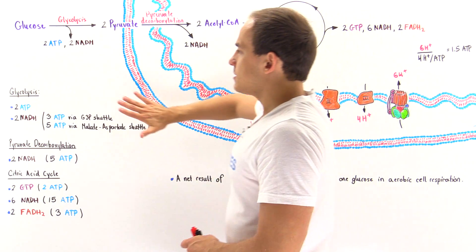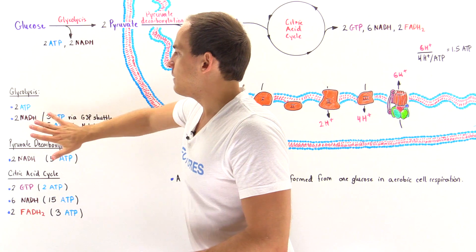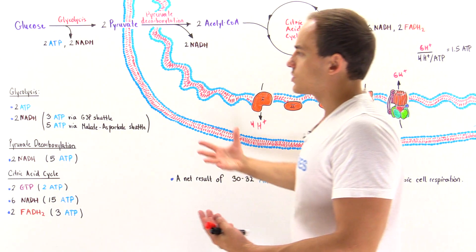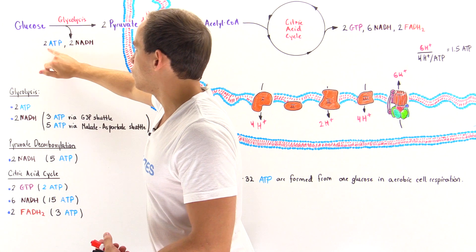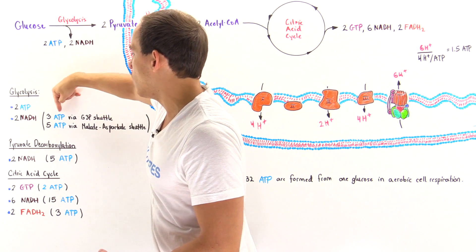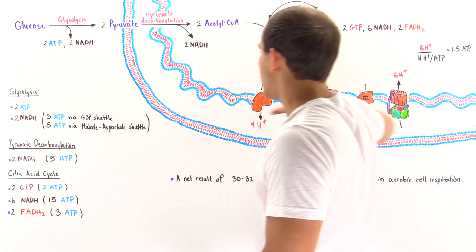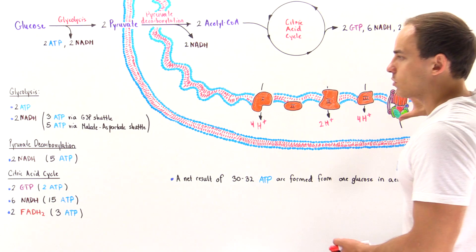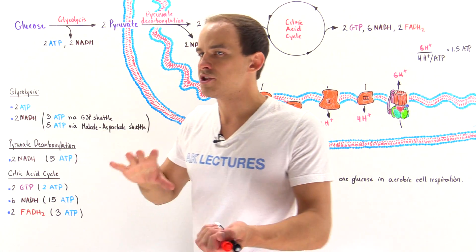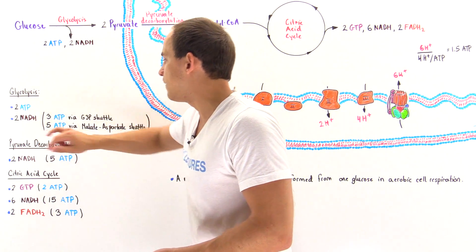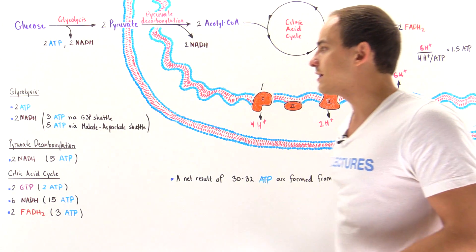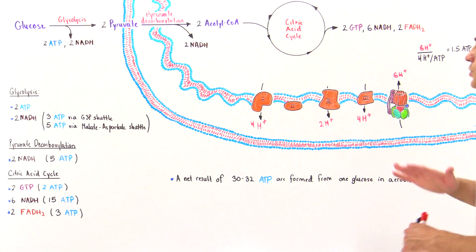So in glycolysis, 2 ATP molecules are produced directly, plus additional ATP via oxidative phosphorylation from the NADH on the electron transport chain. This ranges from 3 to 5 ATP depending on the type of shuttle the cell uses, giving a total of 5 to 7 ATP from glycolysis.